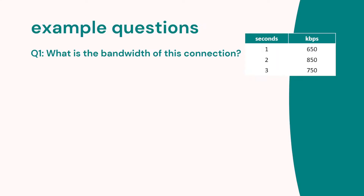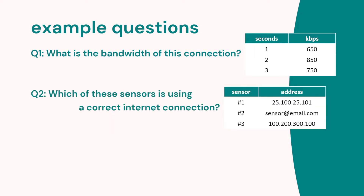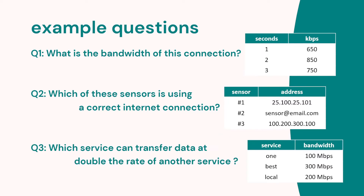While you watch this video, look out for the answers to these questions. What is the bandwidth of this connection? We have three samples and three speeds — so what's the bandwidth of that connection? Question two: we have three sensors and they have addresses — which of these sensors is using the correct Internet connection? And finally, we have three services with their bandwidth — which service can transfer data at double the rate of another service?